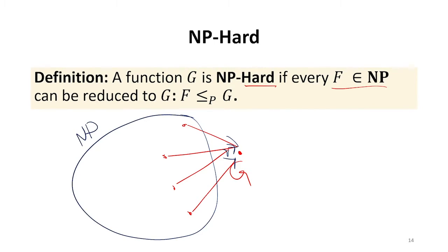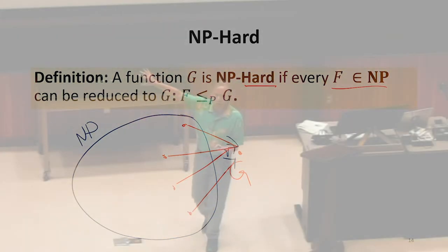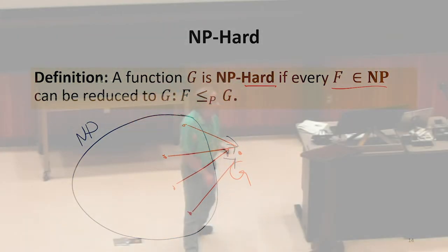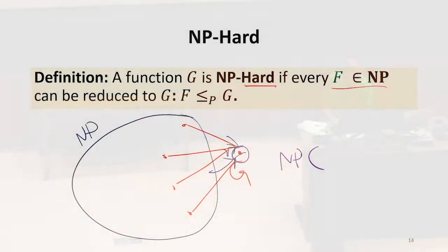NP-completeness says a problem is NP-hard, but also within class NP. To be NP-complete, the problem has to also be within class NP.